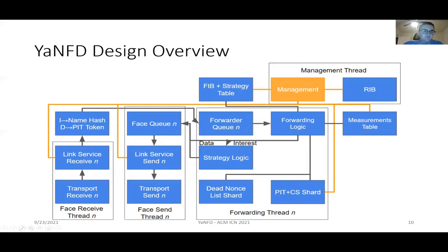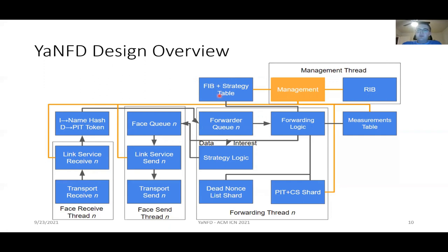Here's a high-level design overview of YaNFD. We have the link service and transport split from NFD, and name hashing and PIT tokens from Multi-Worker NFD and NDNDPDK. Essentially, a received packet goes up through the link service, enters a queue, gets processed by the forwarding logic which accesses the PIT, content store shard, and dead nonce list, passes to the strategy, and then goes into the queue for the send thread which sends it out on the link. We have a global FIB and strategy table because these very infrequently change, and when updates do need to be made, we can lock the FIB strategy table, but this is relatively infrequent compared to how often packets are actually sent.